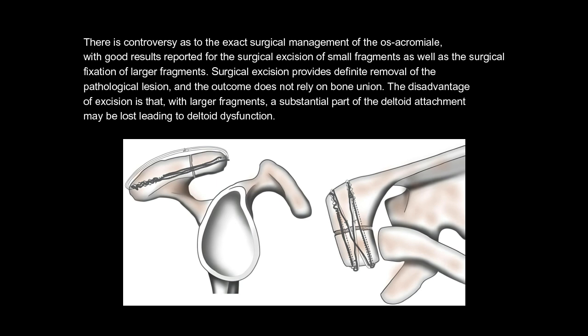Surgical excision provides definitive removal of the pathological lesion and the outcome does not rely on bone union. However, the disadvantage of excision with larger fragments is that a substantial part of the deltoid attachment may be lost, leading to deltoid dysfunction.